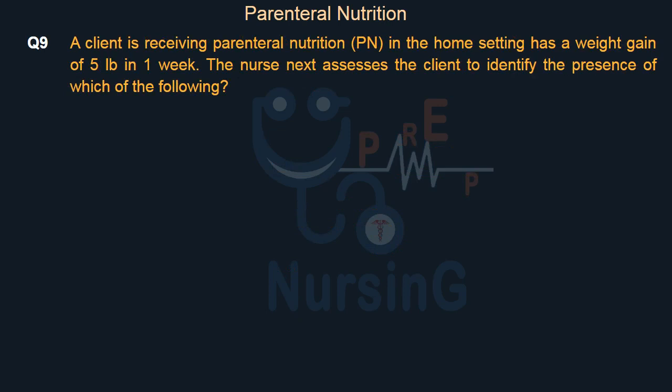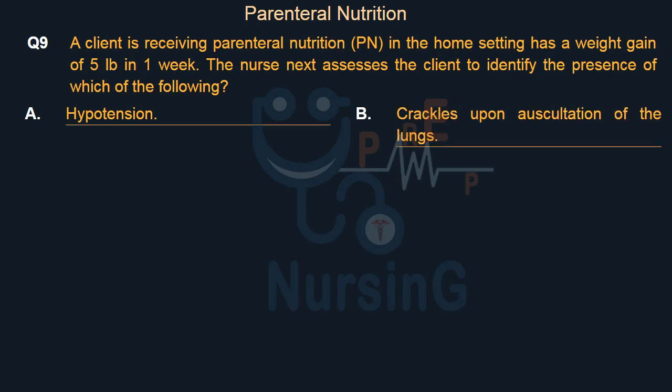A client receiving parenteral nutrition (PN) in the home setting has a weight gain of 5 pounds in one week. The nurse next assesses the client to identify the presence of which of the following? Option A: Hypotension. Option B: Crackles upon auscultation of the lungs. Option C: Thirst. Option D: Polyuria.